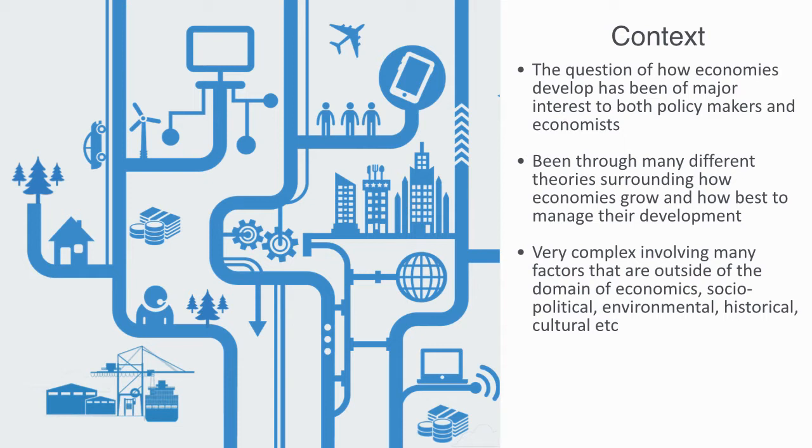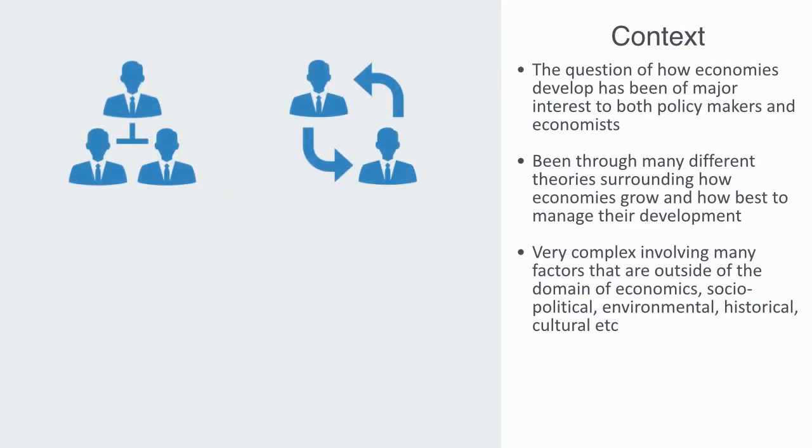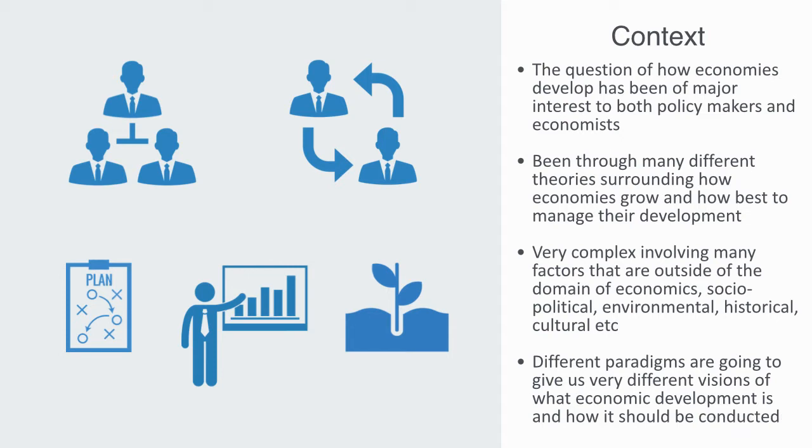As we've talked about in previous videos, there is really just two fundamentally different paradigms to economic management: top-down centralized regulatory systems and distributed adaptive networks. Each of these two very different paradigms to economic management are going to give us a very different vision of what economic development is and how it should be conducted. We'll firstly talk about our standard approach to make it explicit before going on to talk about the evolutionary approach.